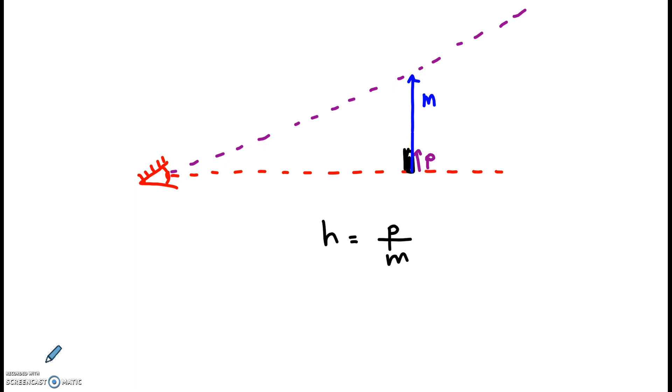But wait a second. The distance d, how far away the phone is, is not part of this equation. So how is the distance going to affect the relative height, the height that we perceive? What's the relationship? Is it a direct relation, an inverse relation, something else?